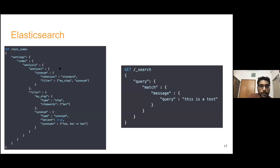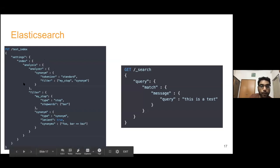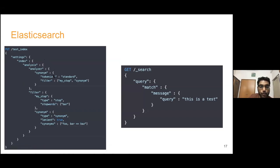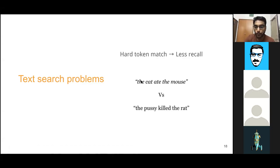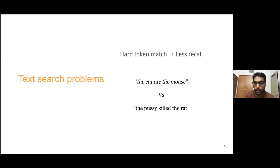Working with Elasticsearch: to create an index, you do a PUT request with an object specifying settings, index analysis, analyzer, synonyms, tokenizer, and filter. The hard token match issue is a key limitation: if the query is 'the cat ate the mouse' and a document says 'the pussy killed the rat,' even though everything matches semantically - pussy relates to cat, killed and ate are similar, rat and mouse are similar - the search will still fail.